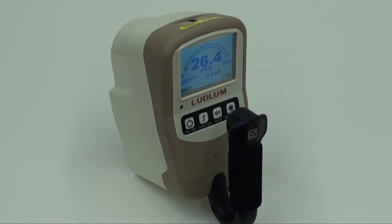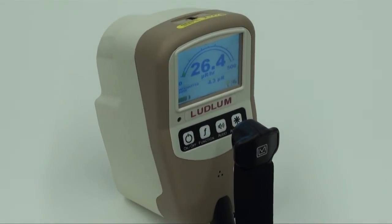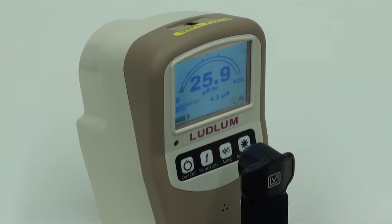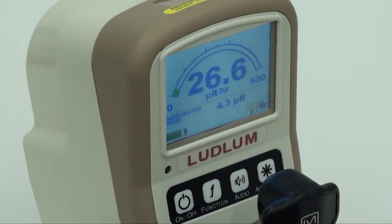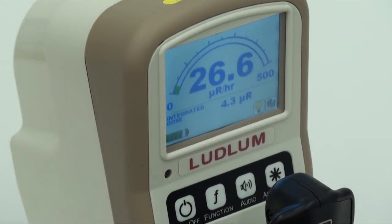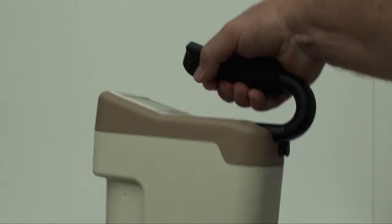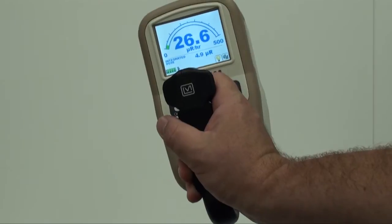The Model 9DP is an ultramodern pressurized ion chamber instrument incorporating forward-thinking capabilities that offer greater utility and PC connectivity. This instrument delivers micro-hour sensitivity over a five-decade measurement range from background to 5R per hour or 50 mSv per hour.